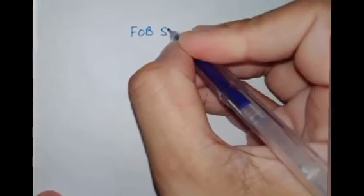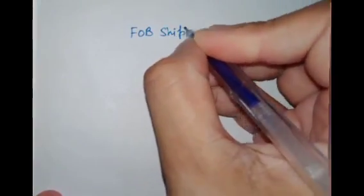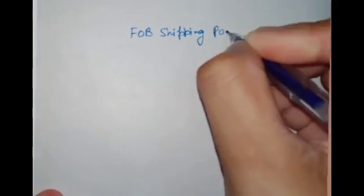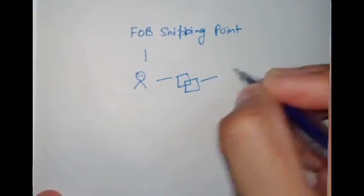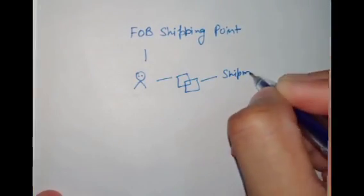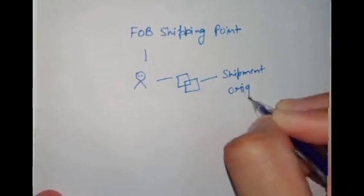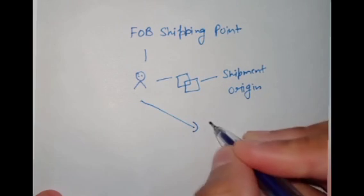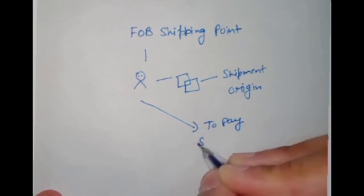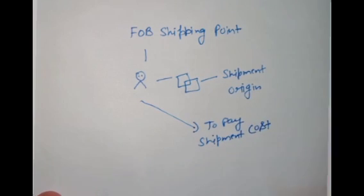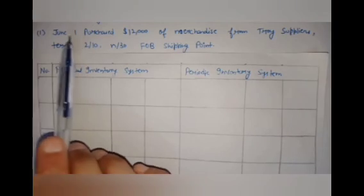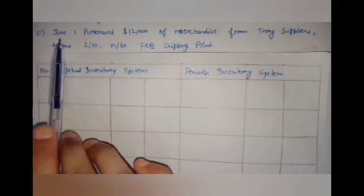FOB shipping point means the buyer assumes ownership of the product as soon as the goods leave the shipment origin. It means it is the responsibility of the buyer to pay the shipping cost. Let's get back to our question.